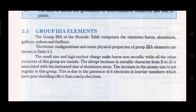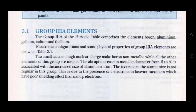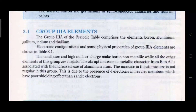Group 3A of the periodic table contains boron, aluminium, gallium, indium, and thallium. In these elements, boron is non-metallic in nature due to its small size and high nuclear charge. The other members, unlike boron, can lose their electrons, so they are metallic in nature.